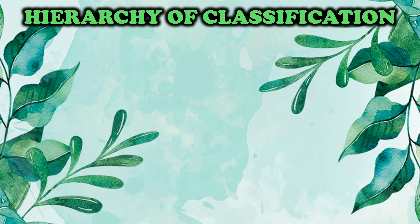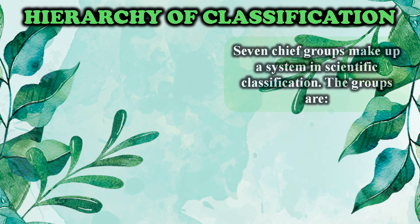Hierarchy of classification. It is difficult to study about so many living organisms, so living organisms are classified so as to make it easier to study them in depth. Various scientists came together and formed the hierarchy of classification where living organisms were classified into different groups and subgroups based on their similarities and differences. For example, if we want to specify a particular student, we say that the student is studying in Carmel of St. Joseph's School, in secondary section, in standard 7th, in division A and the role number of the particular child. This narrows down to that particular student. In the same manner, seven chief groups make up a system in scientific classification.